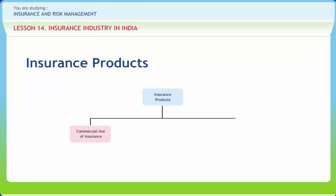The commercial line of insurance includes insurance for businesses, professionals and commercial establishments. Fire policy specifically for the tiny sector, burglary policy, cash policy, motor policy and other miscellaneous policies are also available to traders and general traders. Professional and specific insurance include marine hull insurance, bankers indemnity insurance, stock exchange and brokers insurance, and LPG bottling plant and LPG dealers package insurance.